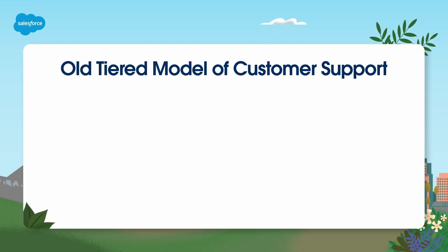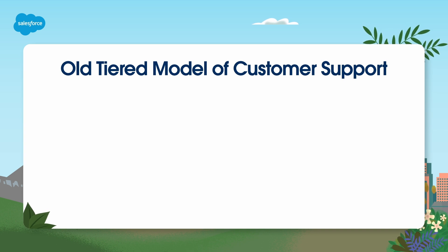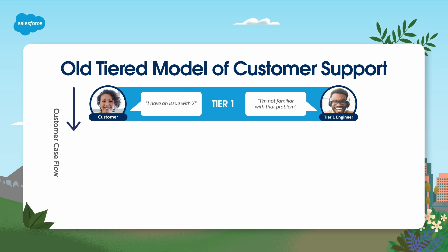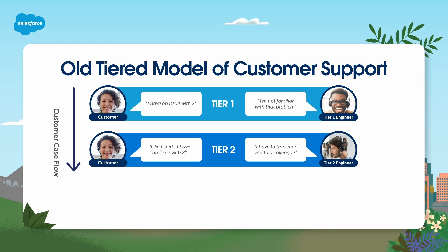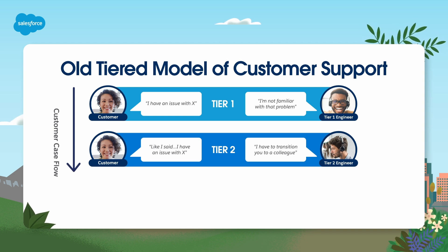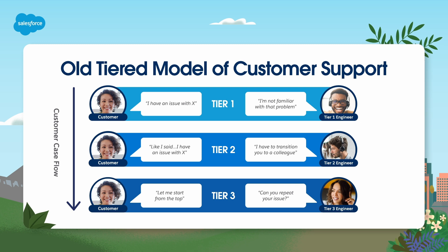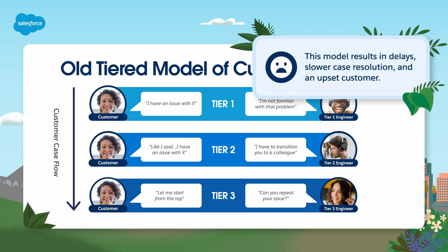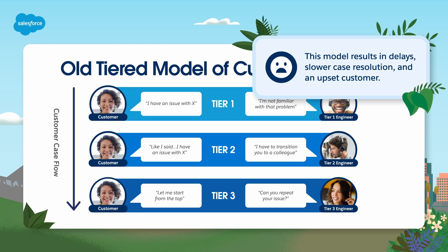We'll start by looking at the traditional tiered model of customer support. This model is often frustrating, and many customers can relate. You call into a support center and explain your situation to an agent after waiting 10, 20, 30 minutes on hold. The agent doesn't know how to fix your problem and puts you on hold again while you're transferred to someone up the ladder, only to have to start at ground zero with the new agent. This model results in delays, slower case resolution, and an upset customer.